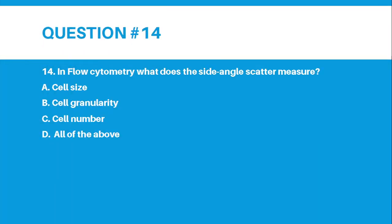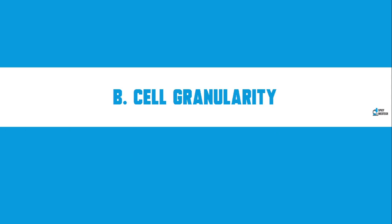Number 14: In flow cytometry, what does the side angle scatter measure? Letter A, Cell Size. Letter B, Cell Granularity. Letter C, Cell Number. Letter D, All of the above. The correct answer for number 14 is Letter B, Cell Granularity.